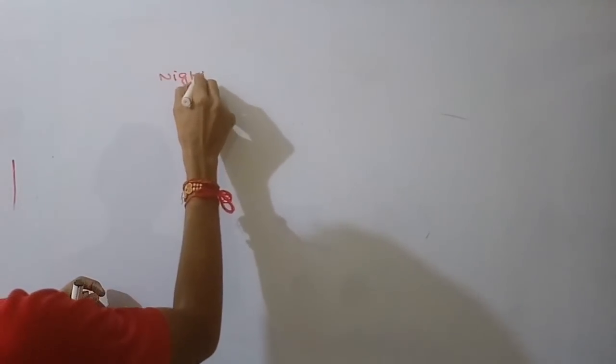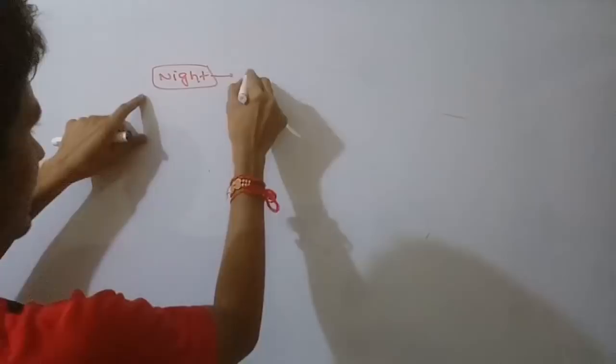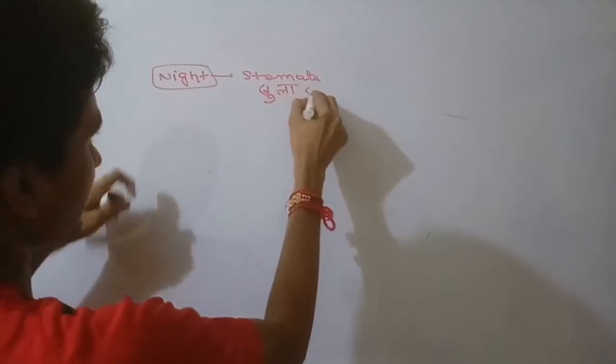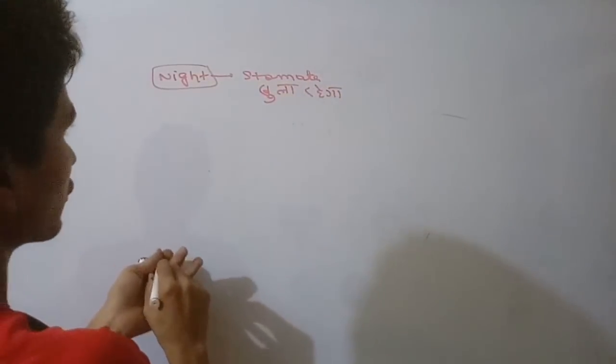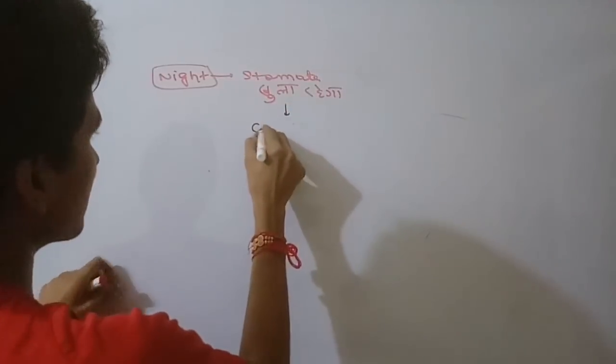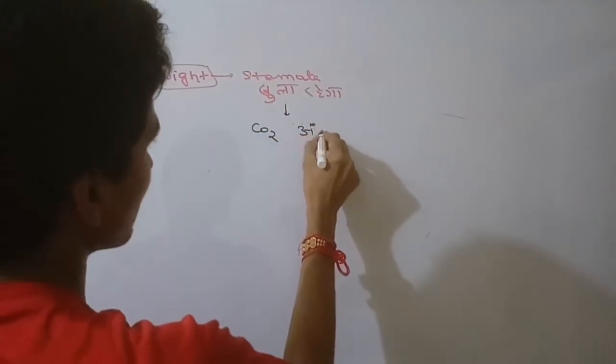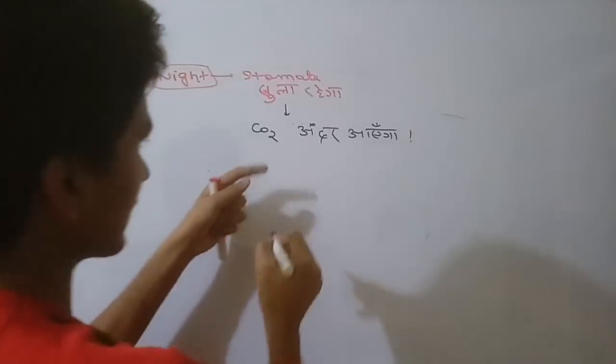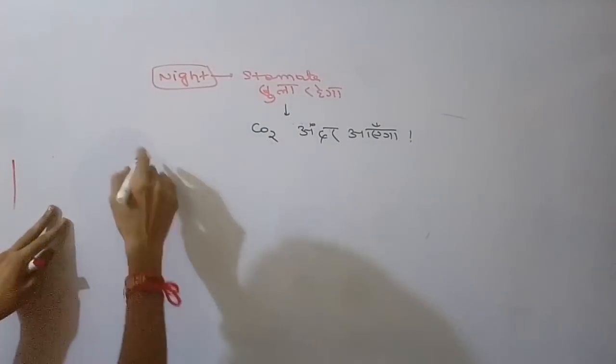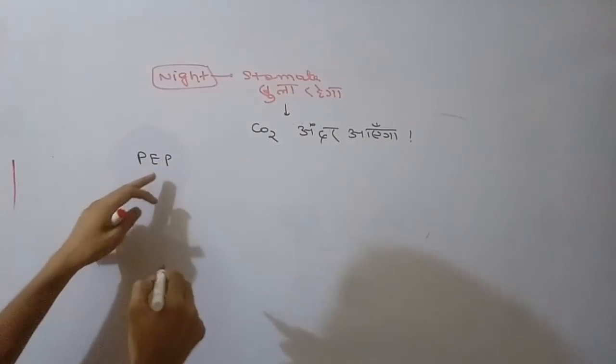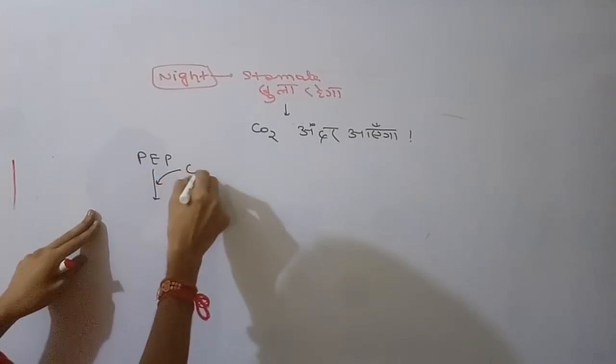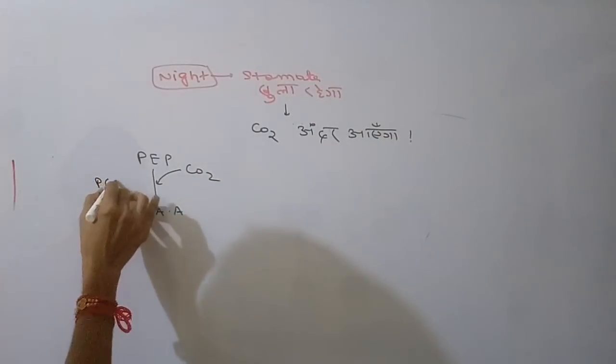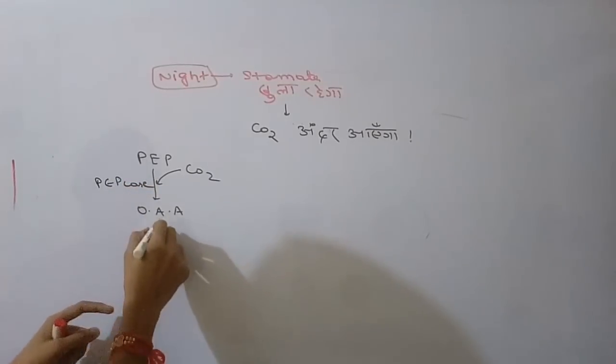At night time, stomata are open and CO2 enters. The first step similar to C4 cycle: CO2 is taken up and combined with PEP (phosphoenolpyruvate) by PEP carboxylase enzyme to form oxaloacetic acid.